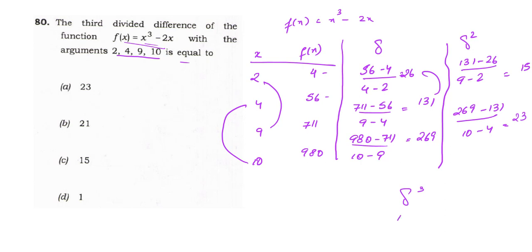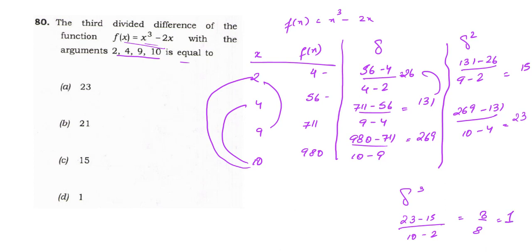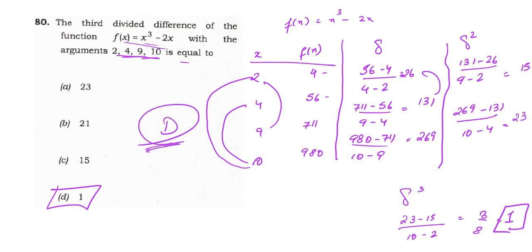Third divided difference: Δ³[2,4,9,10] = (23−15)/(10−2) = 8/8 = 1. So the third divided difference of f(x) = x³ − 2x with arguments 2, 4, 9, 10 is equal to 1. Checking the options, option D is the correct answer to question 80.